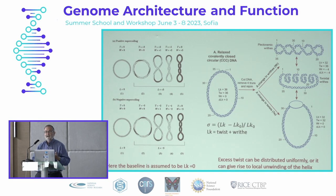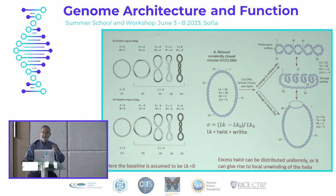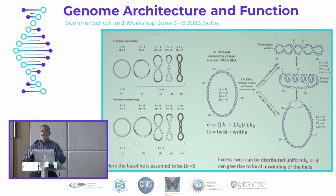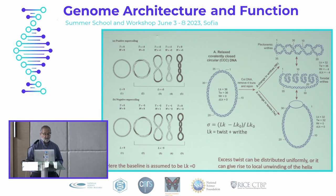There's a topological constraint that says the linking number — how many times one strand wraps around the other — is given by a combination of twisting, where you keep the entire DNA axis flat, versus writhe, where the DNA axis itself is going around. You can see different configurations between twist and writhe.